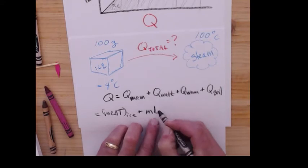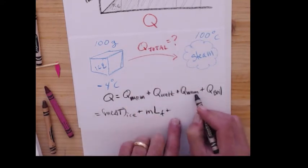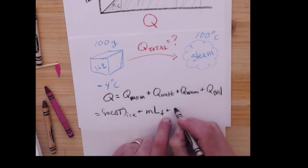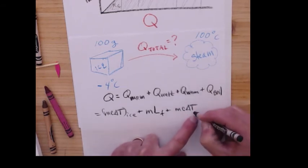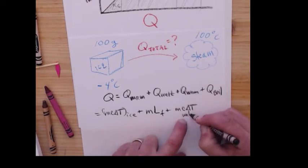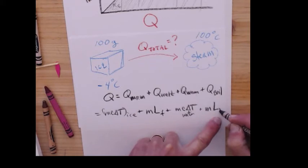ML, that's the latent heat of fusion of the ice, plus warm up again. This is MC delta T. This is not water. This is all water now. And then M, latent heat of vaporization.